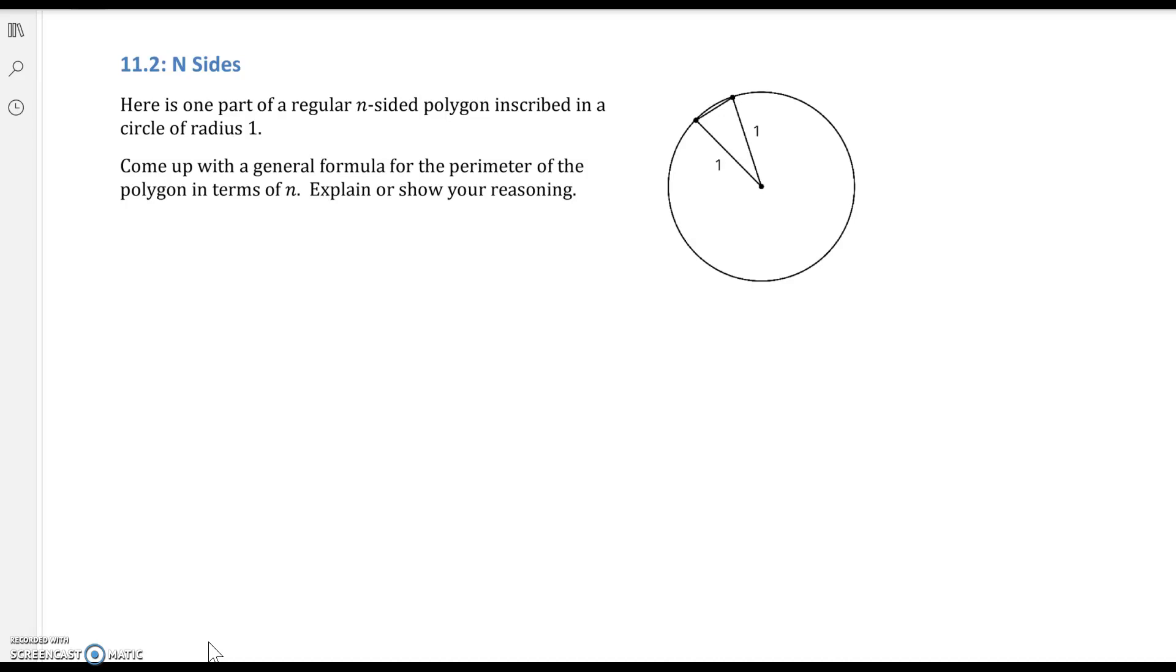Here's one part of a regular N-sided polygon. It's N-sided, which means I don't really know how many sides it's going to have. It's inscribed in a circle that has a radius of 1. We want to come up with a general formula for the perimeter of the polygon in terms of N. Remembering that perimeter is just adding up all the sides.